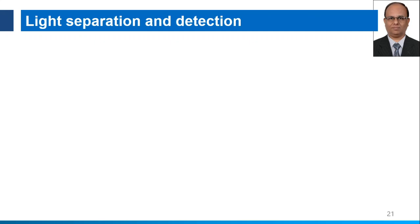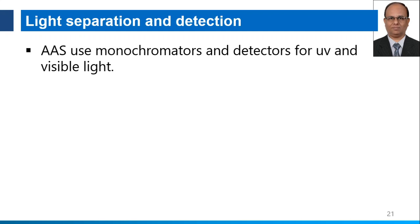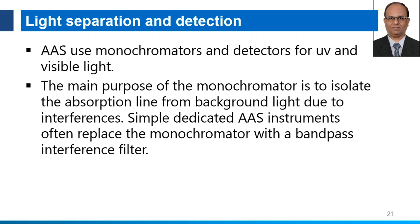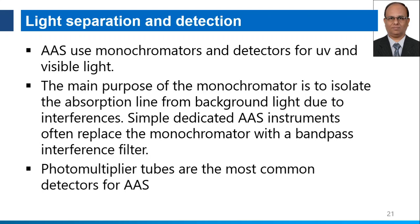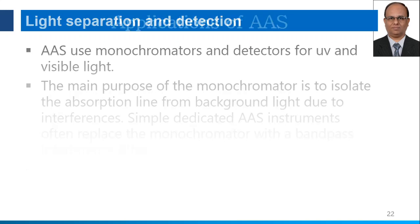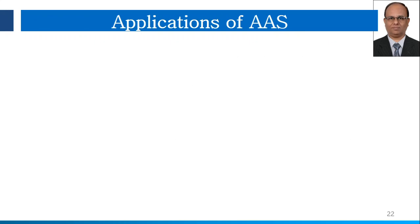The next component is light separation and detection. Monochromators and detectors are used for separation and detection of UV-visible light. The main purpose of the monochromator is to isolate the absorption line from background light due to interferences. We should have a proper detection and monochromating system to avoid interference from other substances. Instead of flame filters, we can have monochromators with bandpass interference filters. Photomultiplier tubes are the most common detectors used in atomic absorption spectrophotometers.